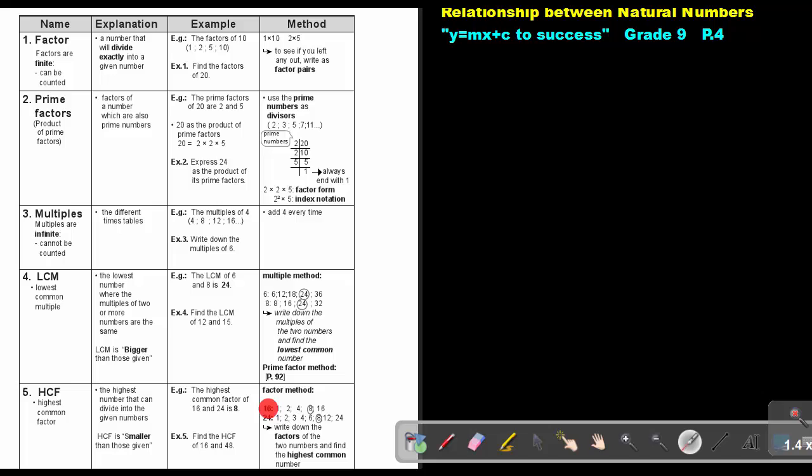Write down the factors of 16. That's 1, 2, 4, 8, and 16. Write down the factors of 24. That's 1, 24, 2, 12, 3, 6, 4. So that's all the factors.